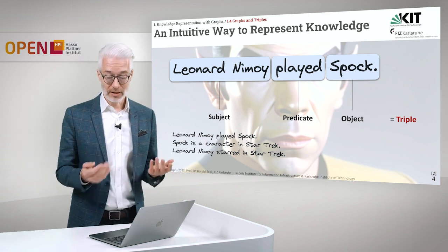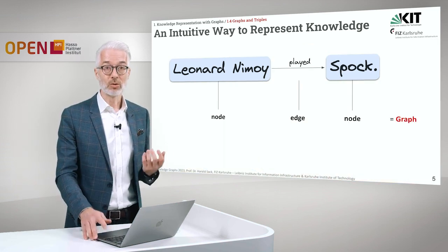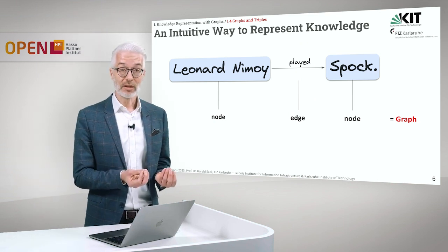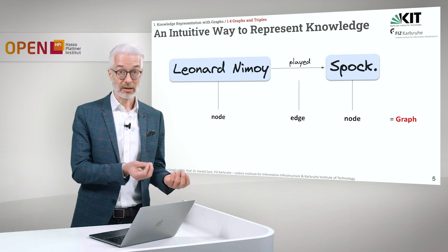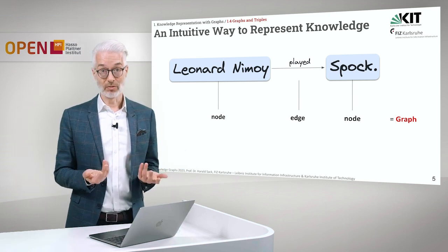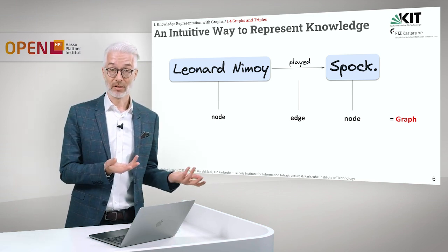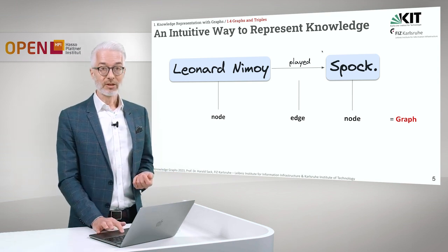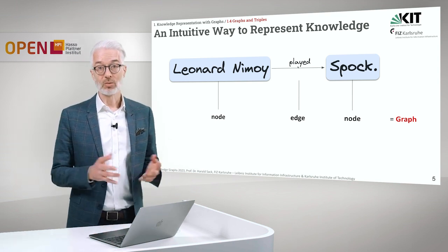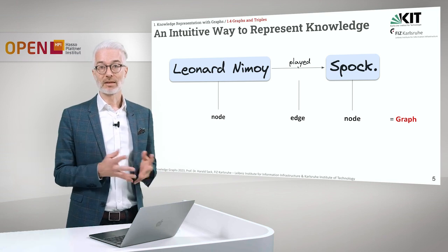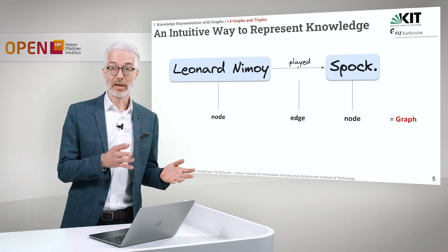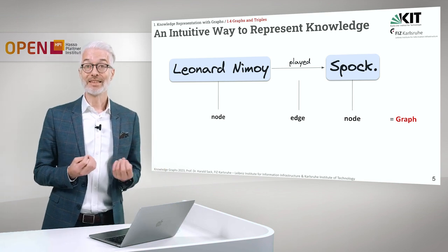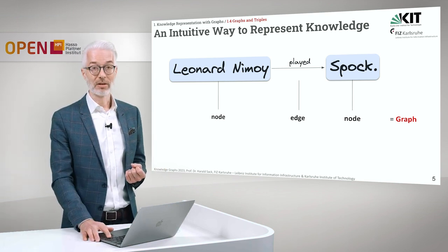As you see here, this gives way to a rather intuitive knowledge representation in terms of graphs. You interpret the subject and the object as nodes, or vertices — so Leonard Nimoy is a node and Spock is a node. You simply draw an edge between the two of them, and you get Leonard Nimoy played Spock as a graph representation of that simple triple.